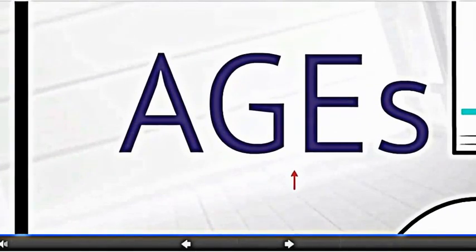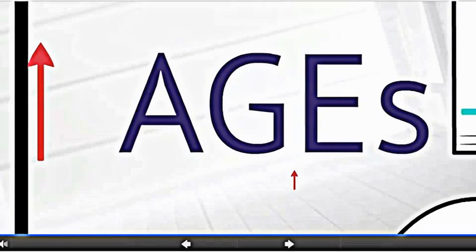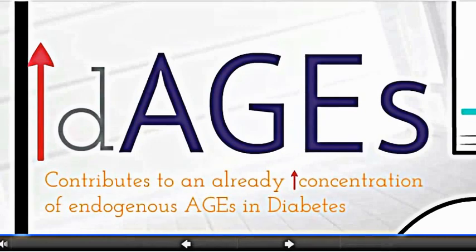In addition to AGEs that are formed endogenously, the modern diet represents an important exogenous source of AGEs. Most notably, diet-derived AGEs analogously contribute to the whole-body AGE pool and AGE-related disease pathologies.